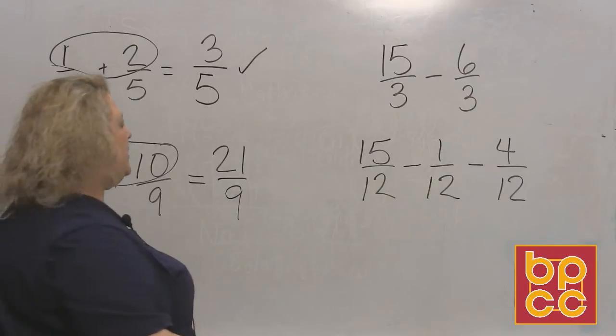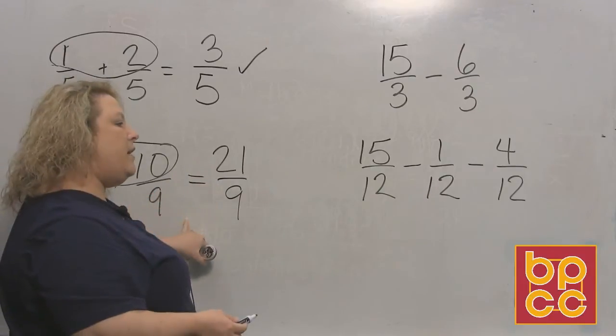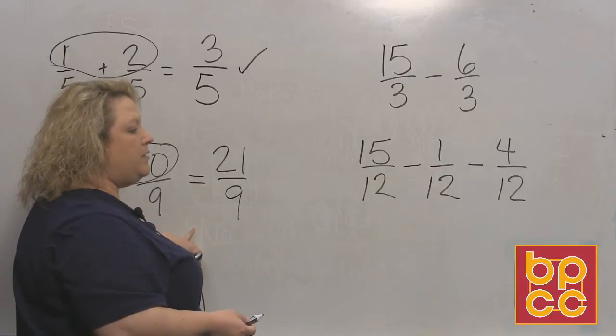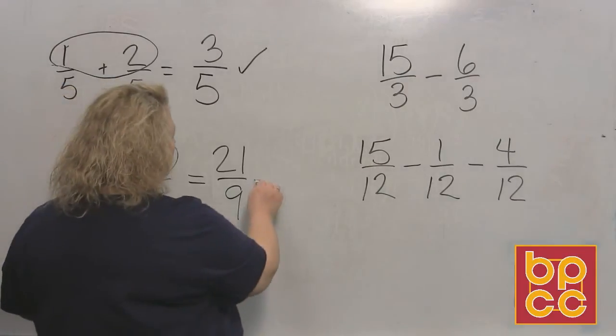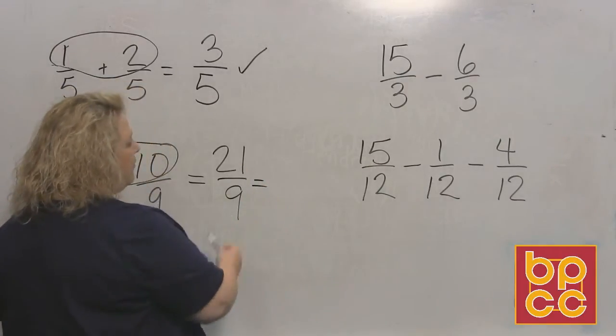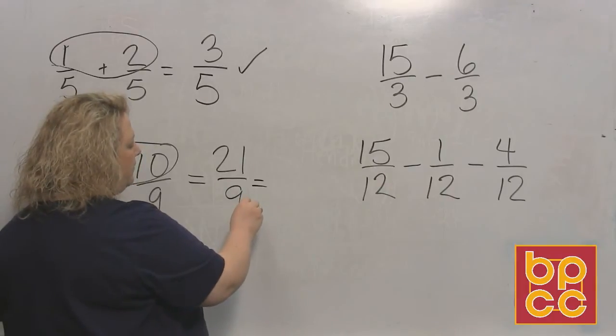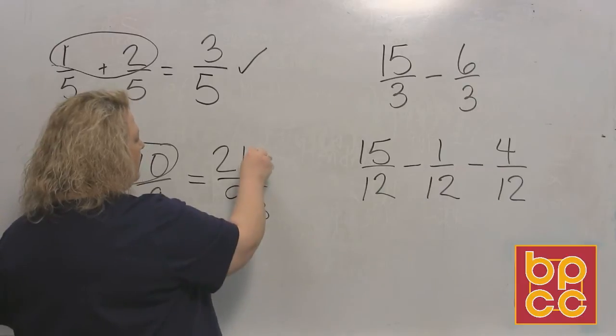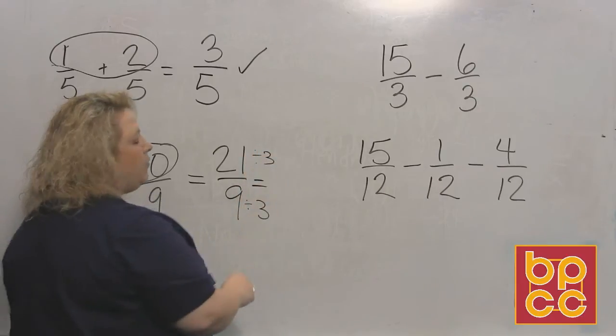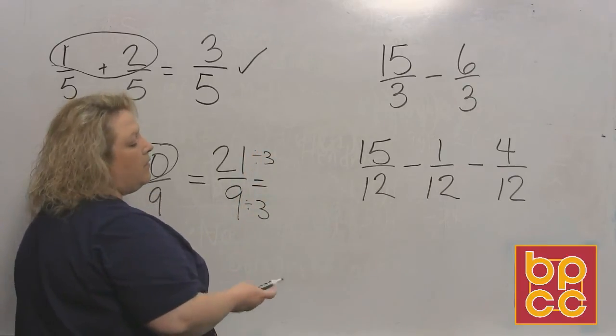And then I reduce my fraction. Now, in this case, I do have something in this fraction that I can reduce it by. Both of them have a three in common. From a previous module we talked about if they both have a three in common, we would divide by three. So if I divide the bottom by three, I divide the top by three, because what you do to one, you must do to the other or it's not equal.